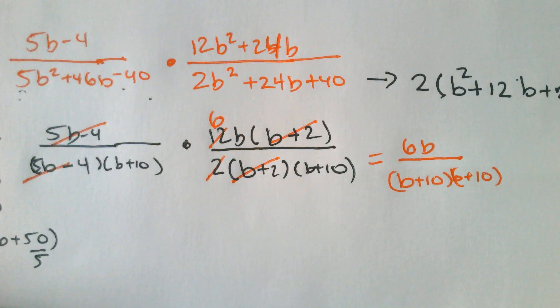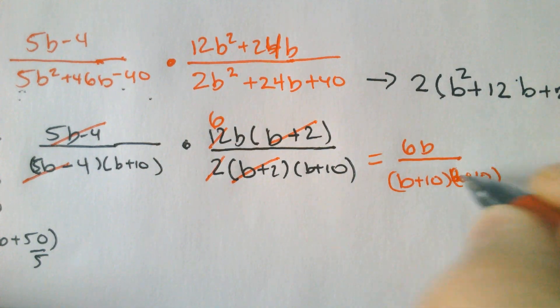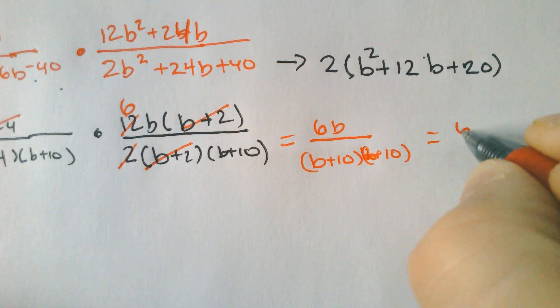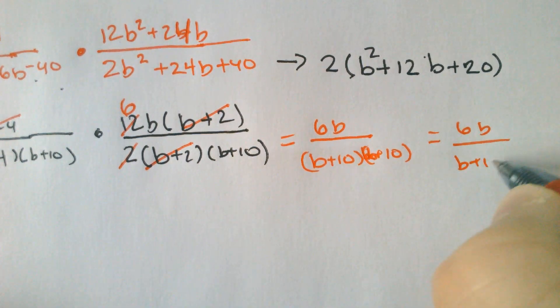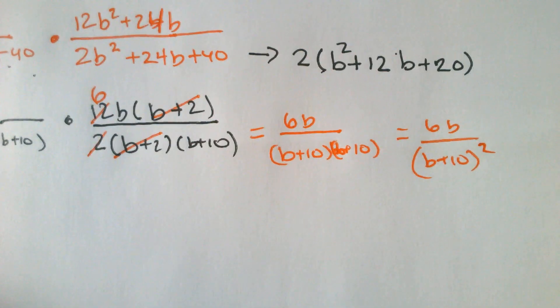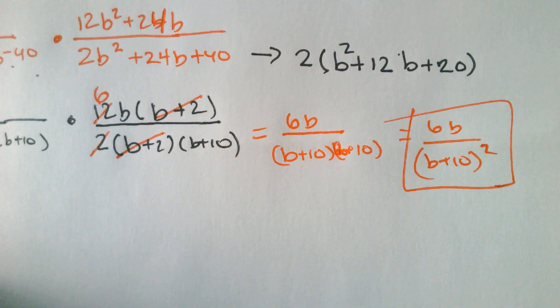The B plus 2 and the B plus 2 would cancel. The 5B minus 4 and the 5B minus 4 would cancel. You may think that the B plus 10s cancel. They do not, ladies and gentlemen, because they're both on the bottom of the fraction. But we do have a 2 and a 12. That would make 6. 2 divided, 12 divided by 2 is 6. So final answer, we got 6B over (B plus 10) squared.